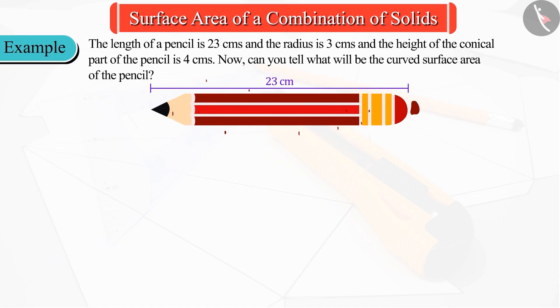The length of a pencil is 23 centimeters and the radius is 3 centimeters, and the height of the conical part of the pencil is 4 centimeters. Now, can you find what will be the curved surface area of the pencil?